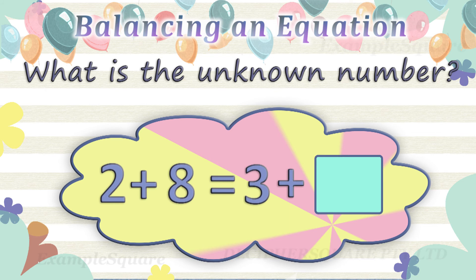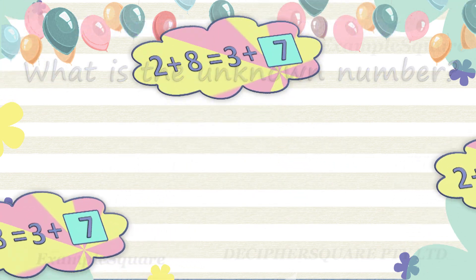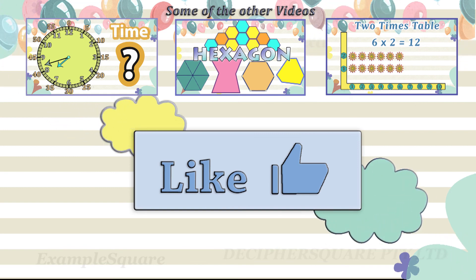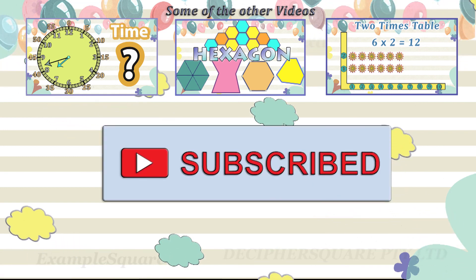In this equation, the left side is 2 plus 8 and the right side is 3 plus an unknown number. 2 plus 8 on the left side equals 10. For this equation to balance correctly, the right side should also be equal to 10. The right side is 3 plus an unknown number. 3 plus 7 equals 10, so the unknown number here is 7. If you like this video, do give it a thumbs up and click subscribe to get updates about new videos on this channel.